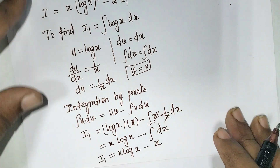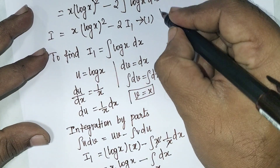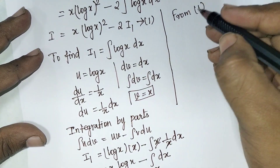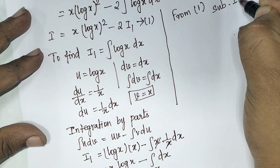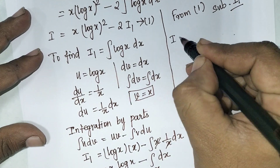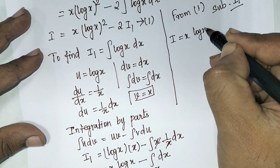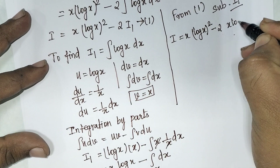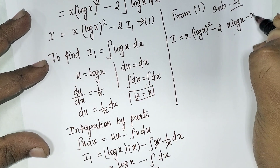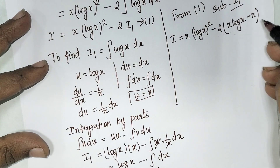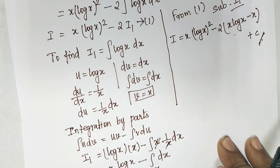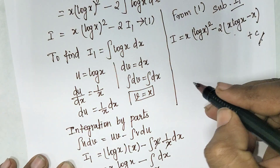Substituting I1 back into equation one: I equals x·(log x)² minus 2·(x·log(x) − x) plus C. This is the final answer. This is an important and repeated problem in university exams — practice it well.